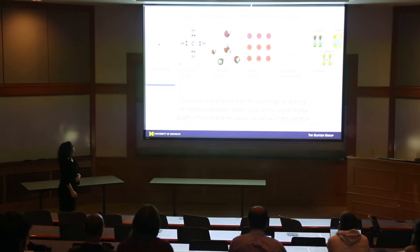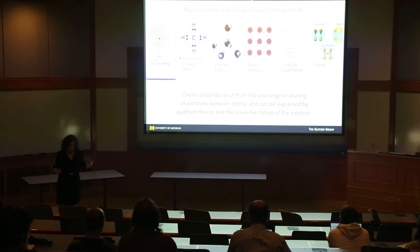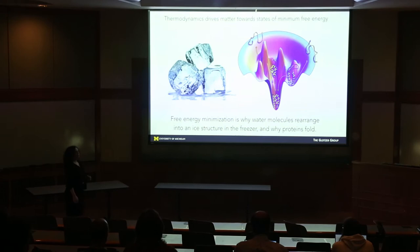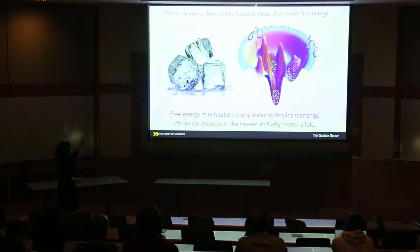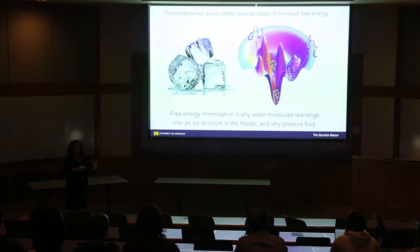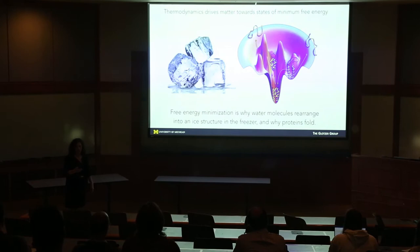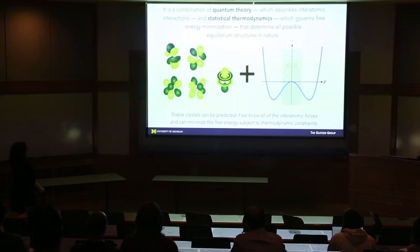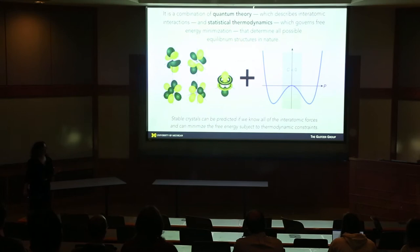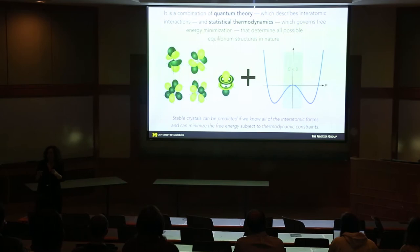There are many different examples of chemical bonds. Thermodynamics is also important in determining what kinds of structures and behaviors we get from materials. Thermodynamics drives states of matter towards minimum free energy, towards equilibrium. Free energy minimization is why water molecules rearrange from an amorphous liquid structure to form ice in your freezer, why proteins fold, and determines all the equilibrium structures we find in nature.